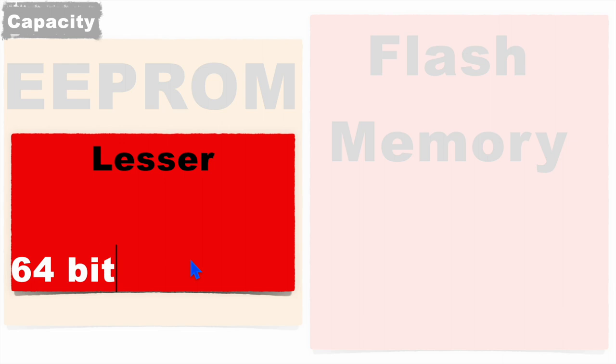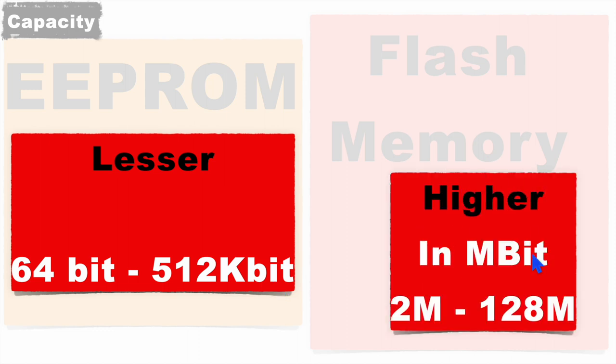The third difference is capacity. EEPROMs are available in very small sizes, ranging from 64 bits to 512 kilobits. On the other side, flash memory capacity is in megabits, and in the market you can easily find it available from 2 megabits to 128 megabits.